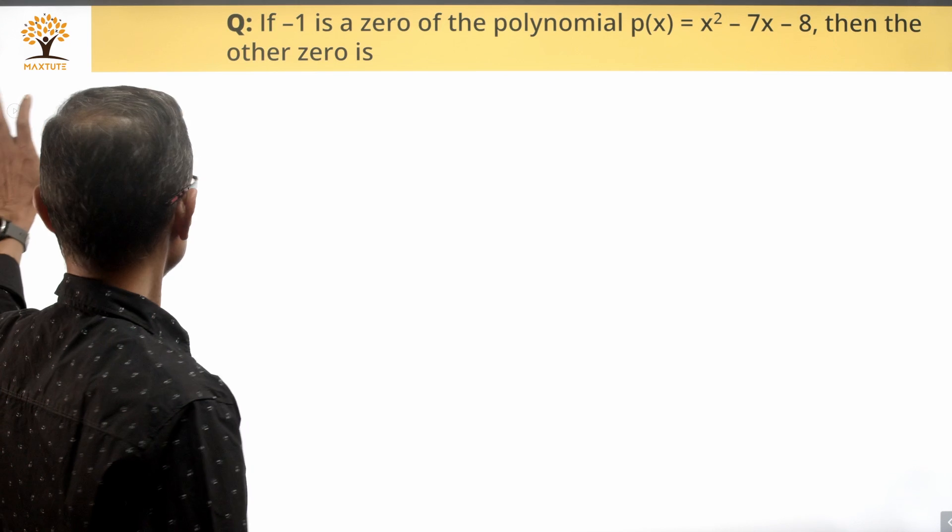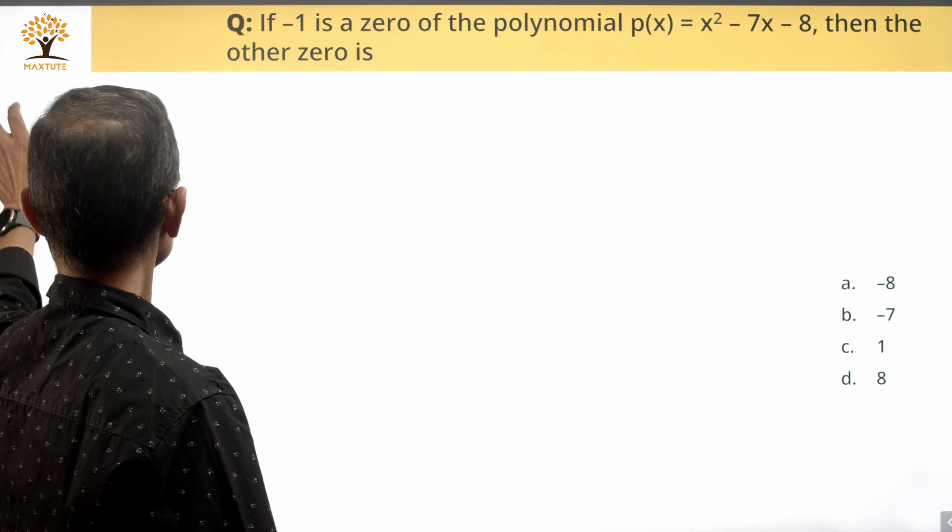So then the other zero is basically 8. Choice D is the correct answer to this question.